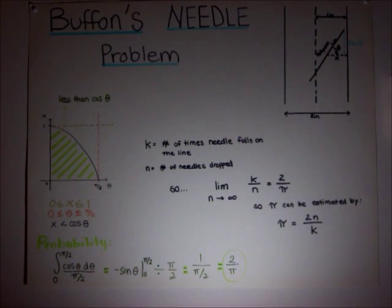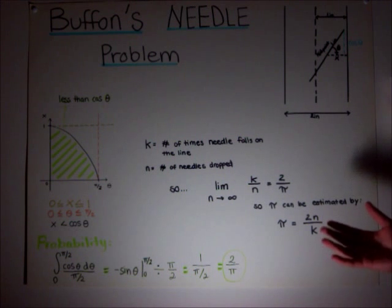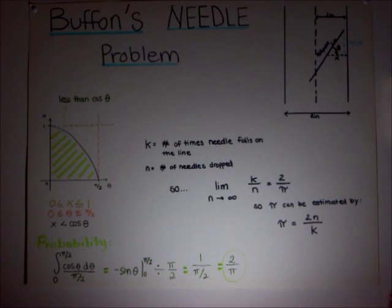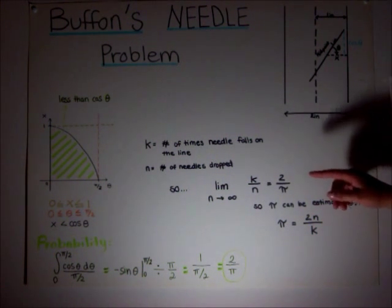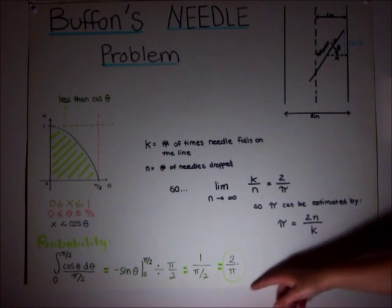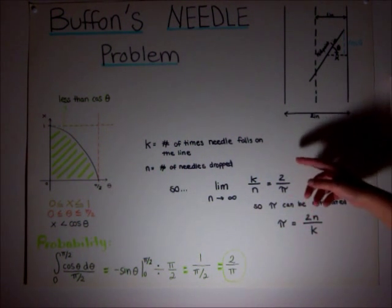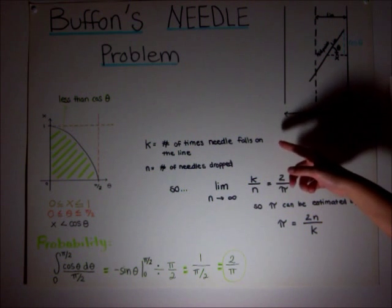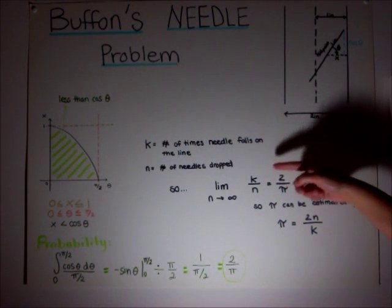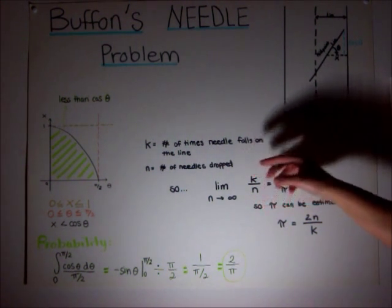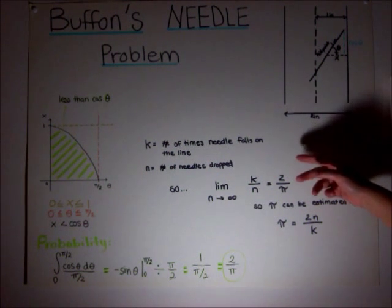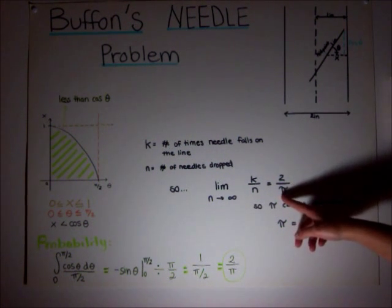So to find a probability, you would need to take the number of times something happens over the number of total times that you've done the event. So the probability that we found equals 2 over pi. You have to take the number of times the needle falls on the line, which is k, and divide that by n. And since that's the probability, we can set that equal to 2 over pi.